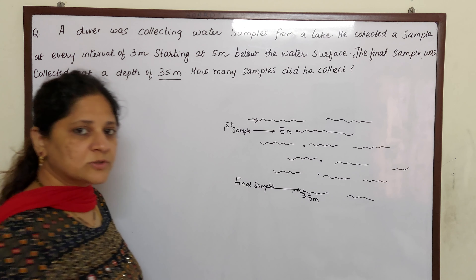So the diver started from here, collected water samples every 3 meters, and the final sample was collected. How many samples did he collect in all? First, to find that out, we should know what is the distance covered by the diver. The distance covered by the diver is from 5 meters to 35 meters. So, distance covered by diver is 35 meters minus 5 meters, which equals 30 meters.